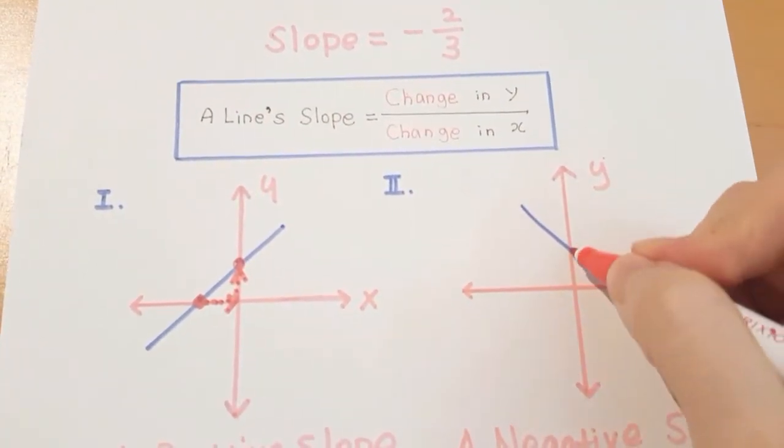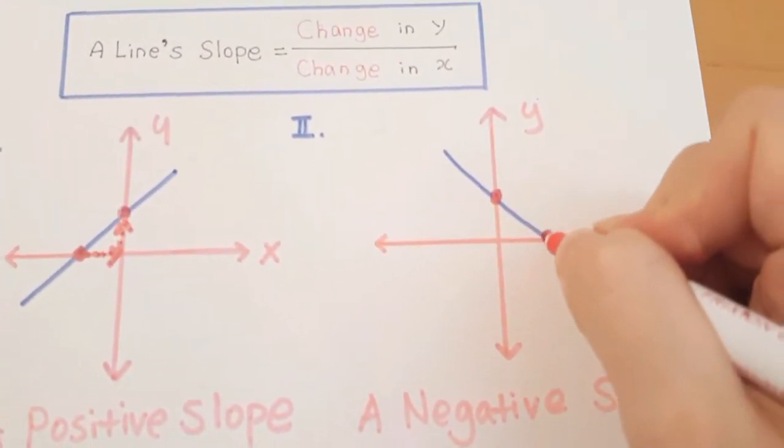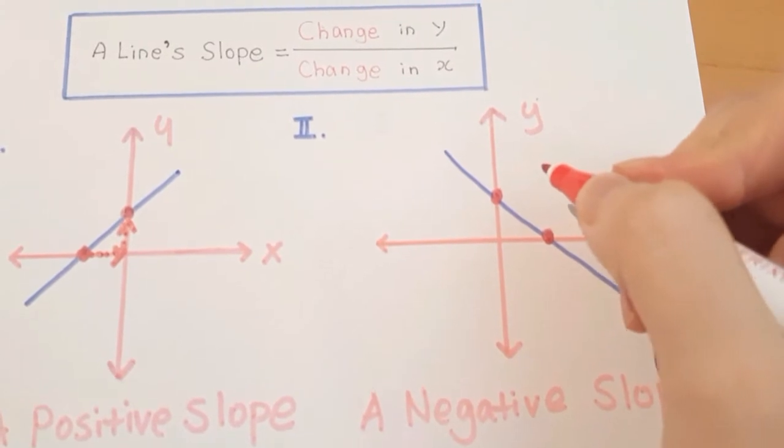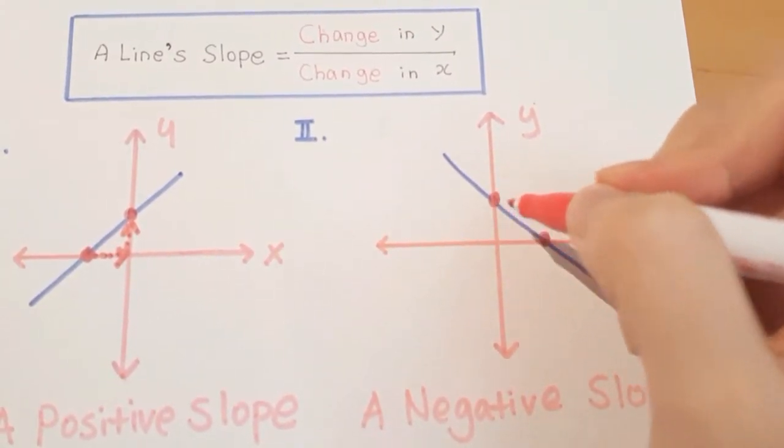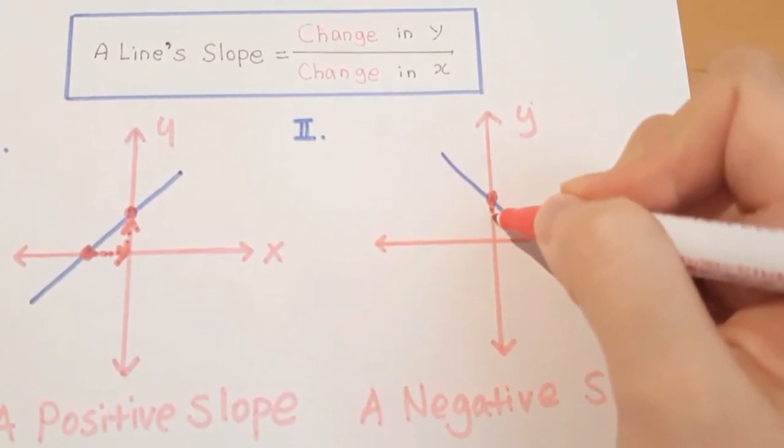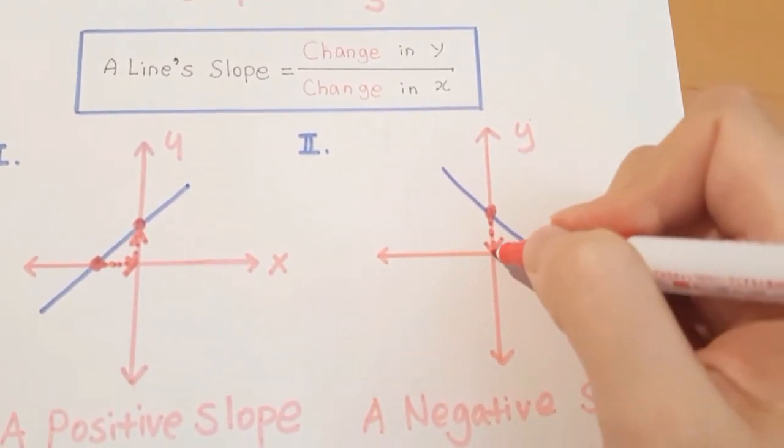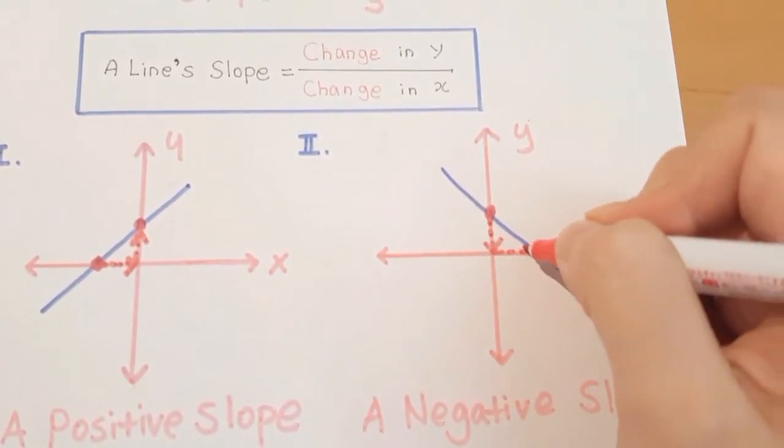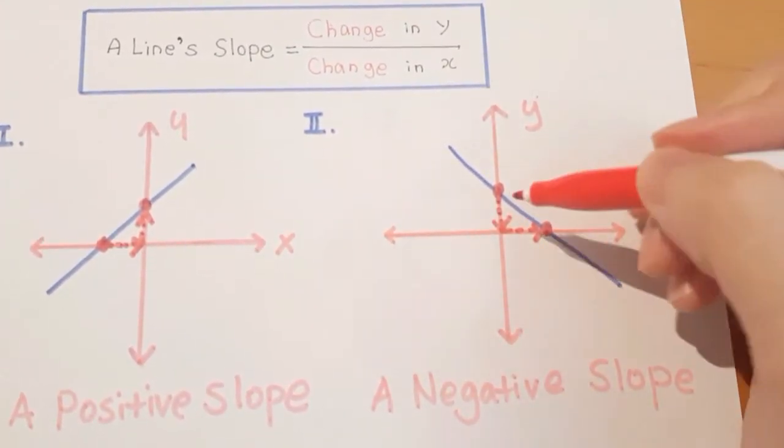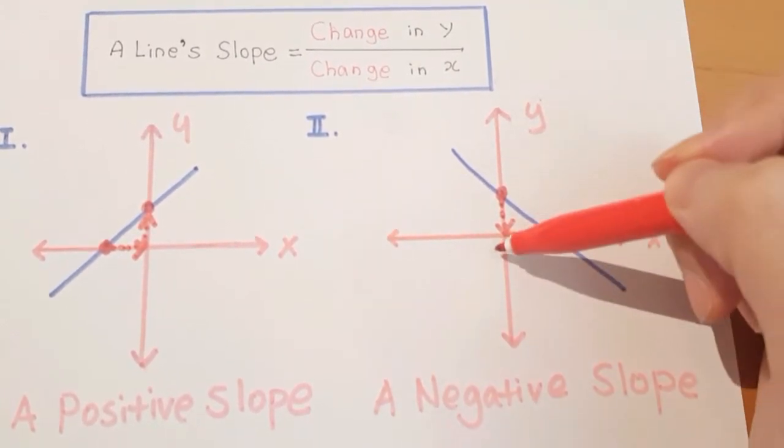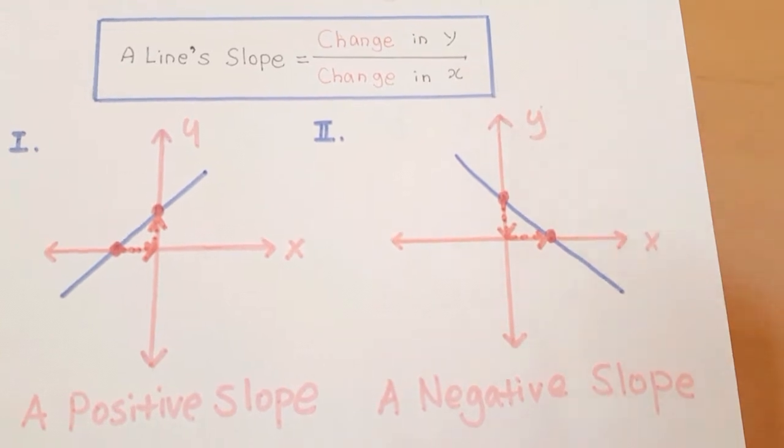And let's say there are two points here, here. And this is a change in Y. We can look at it as Y is decreasing and X is increasing, and we can say that Y is decreasing as X increases.